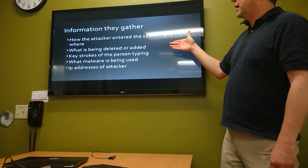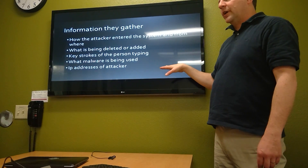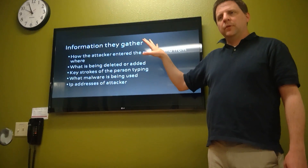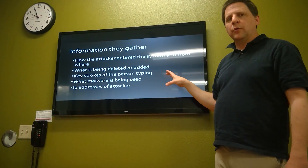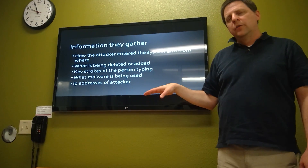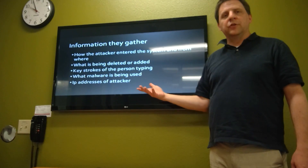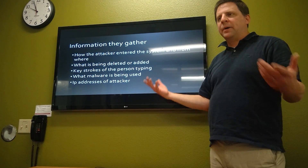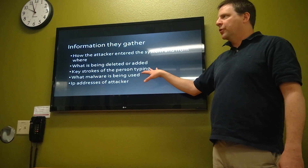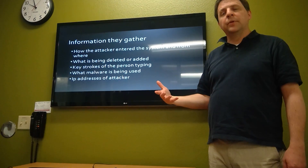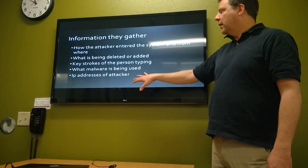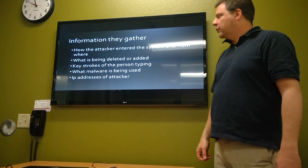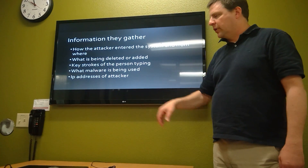The information gathered includes how the attacker entered the system and from where. For example, the Norris website shows the IP addresses of where traffic was going to and where it was from. It also captures what is being deleted or added — for example, if somebody elevated their privileges to become an administrator, or deleted things to bypass firewalls. Keystrokes of the person typing can be captured, such as the actual code of a program used to download into the system. What malware is being used — like a rootkit or a Trojan added to the system — and, of course, the IP addresses.